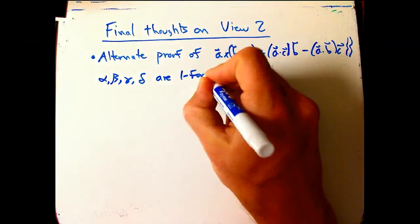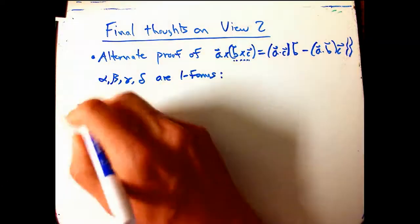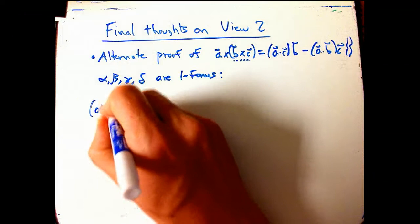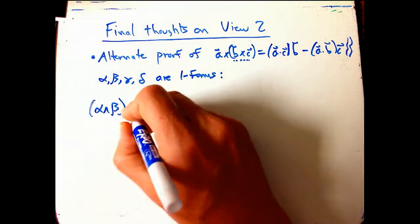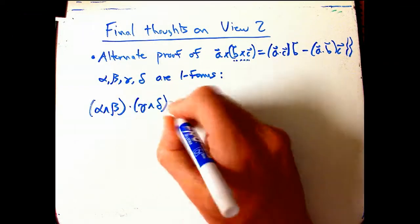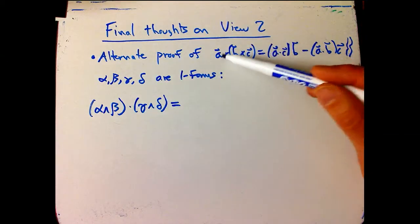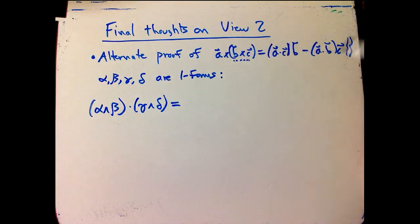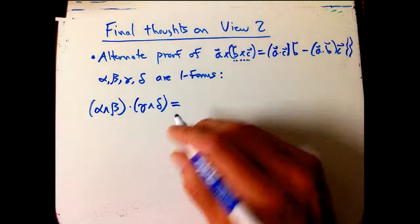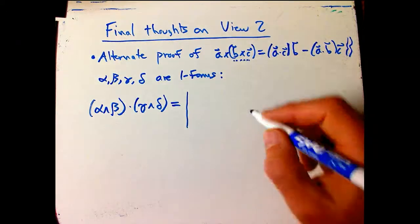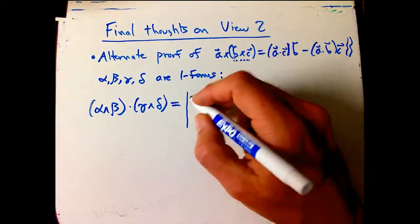Then I'm going to create two two forms, alpha wedge beta dotted with gamma wedge delta. This is rather more symmetrical than this thing, where this was like, this is a two form, and then you have to cross this in, and then it ends up being interior product. It's kind of weird. Although we've seen some nice things about it, certainly.